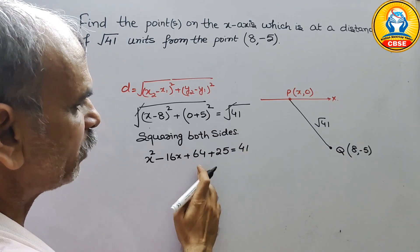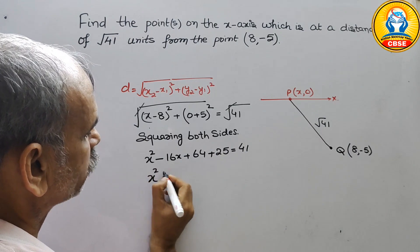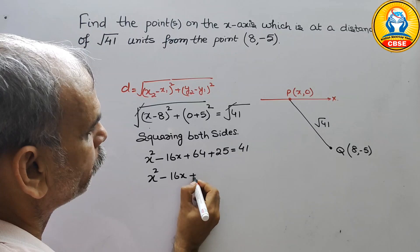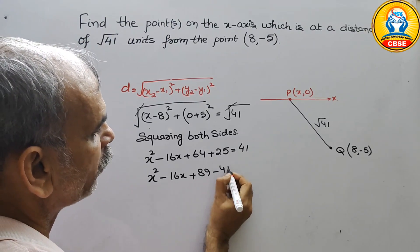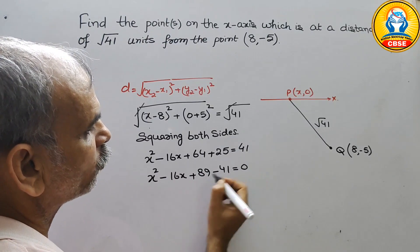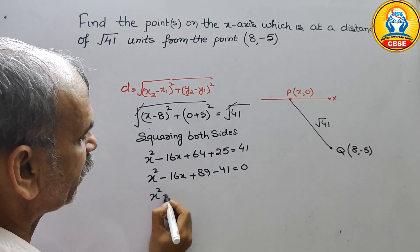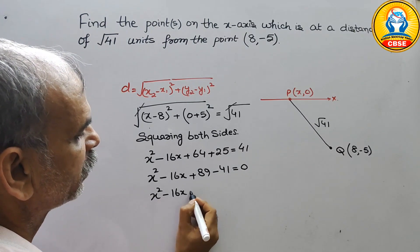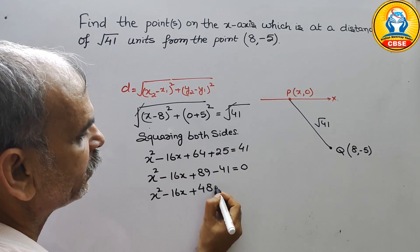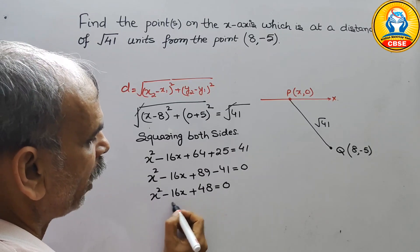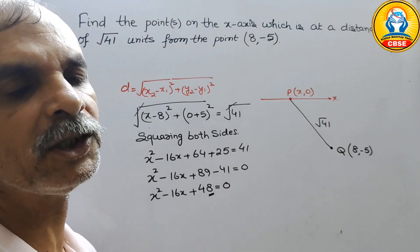41 को इस side में लेकर आओ और दोनों को add करो: X square minus 16X plus 89 minus 41 is equal to 0। तो ये हो जाएगा X square minus 16X plus 48 is equal to 0। अब quadratic equation में middle term splitting में जाओ।